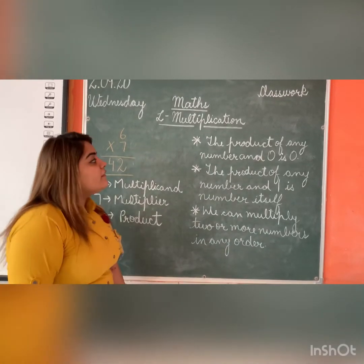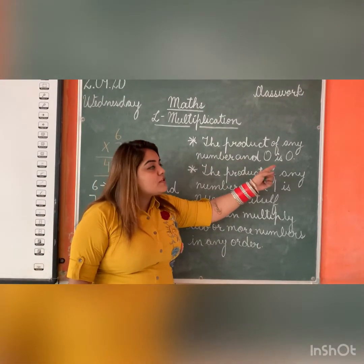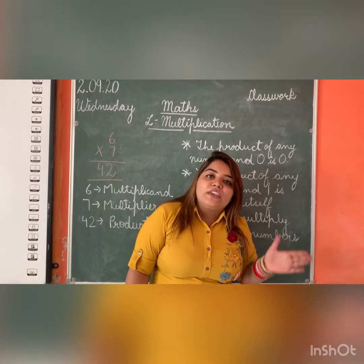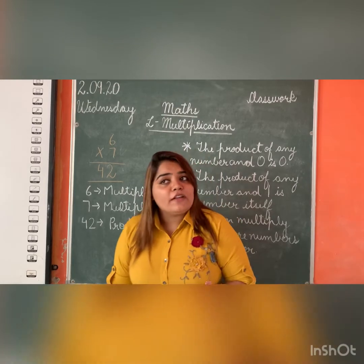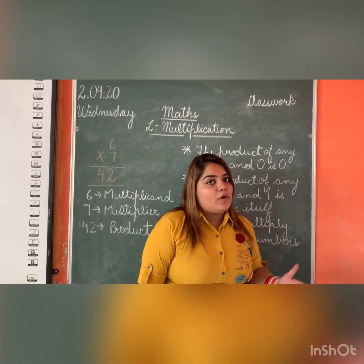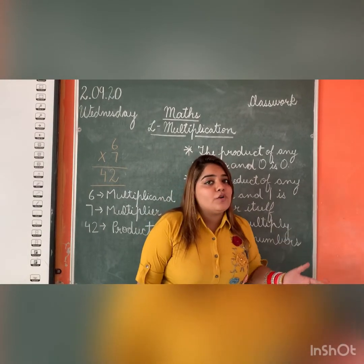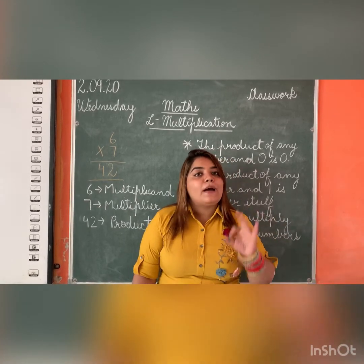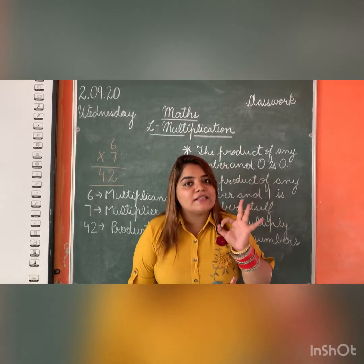Fine. Next, the product of any number and 0 is 0. Whenever you multiply any number by 0, you get the answer as 0. For example, 6 into 0 gives the answer 0. Whenever you multiply 7 into 0, you get the answer 0. It means whenever you multiply any number by 0, you get the product as 0.